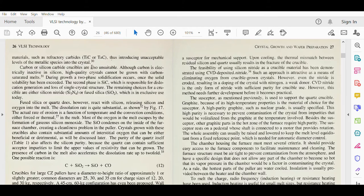Carbon or silicon carbide crucibles are also unsuitable. Although carbon is electrically inactive in silicon, high quality crystals cannot be grown with carbon saturated melts. During growth, a two-phase solidification occurs once the solid solubility has been exceeded. The second phase is SiC, which is responsible for dislocation generation and loss of single crystal structure. The remaining choices for crucible are either silicon nitride or fused silica, and they are in use today.